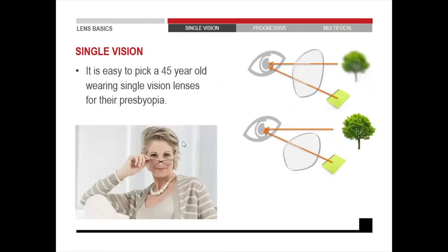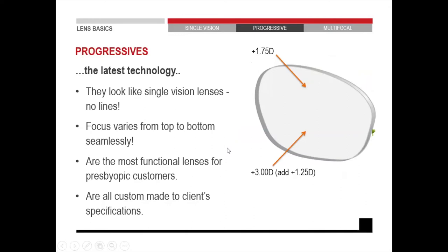This is a picture of someone with reading glasses — single vision lenses. They put them on the tip of their noses so they can see clearly at near, but when they want to look far, they have to look over their glasses. A lot of people with presbyopia do not want to keep putting their lenses on and off repeatedly.